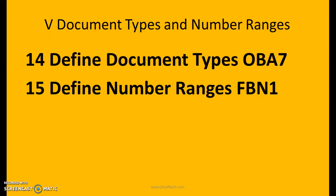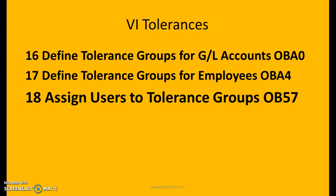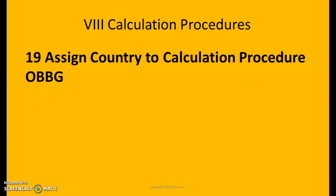Define document types: OBA7. Define number ranges: FBN1. Define tolerance groups for GL accounts: OBA0. Define tolerance groups for employees: OBA4. Assign users to tolerance groups: OB57.